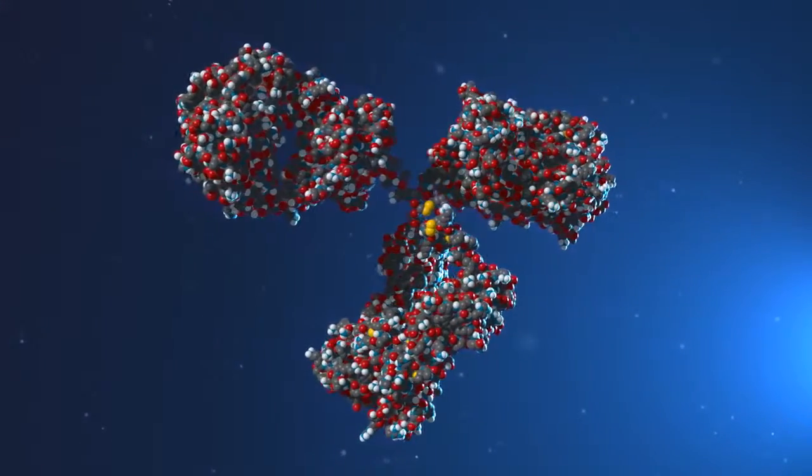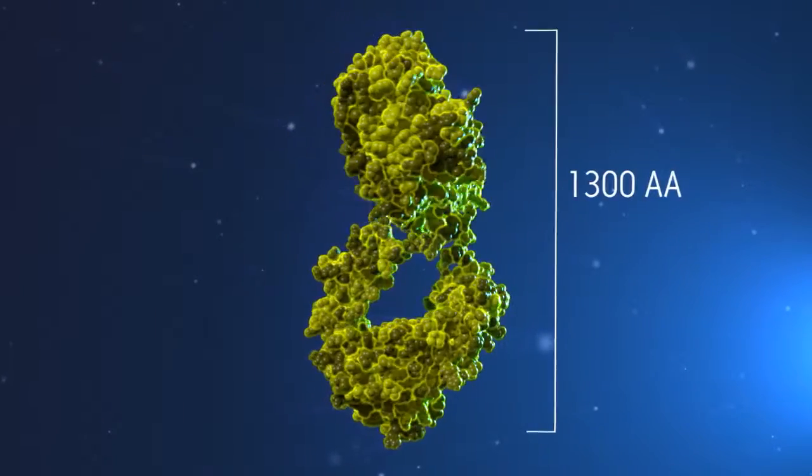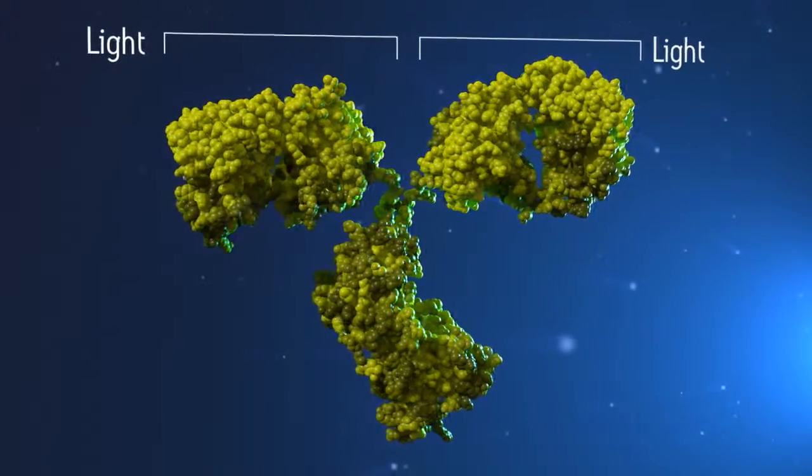Antibodies are inherently complicated proteins, roughly 150 kilodaltons in size, made up of 1300 amino acids arranged in four chains, two light chains and two heavy chains.